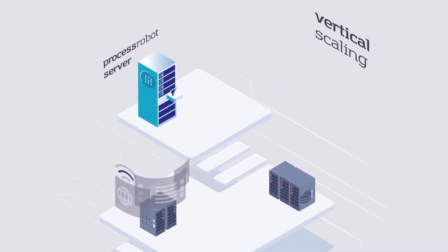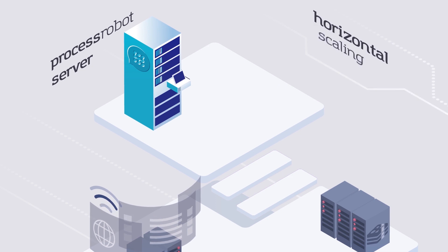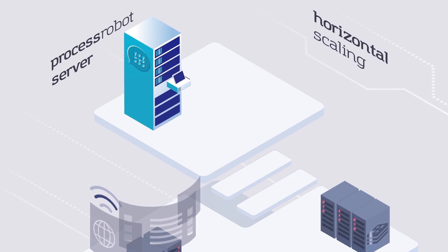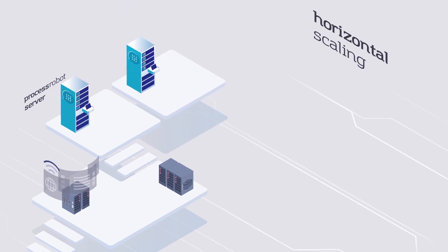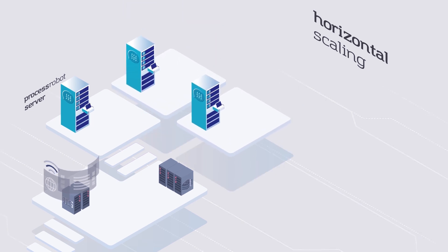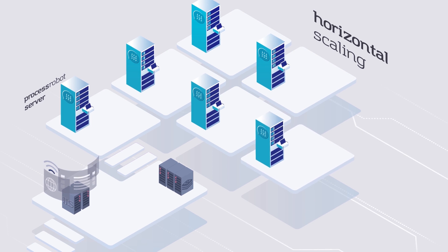Scaling Process Robot is effortless and fast, without requiring big IT teams or costly procedures. Process Robot offers unparalleled horizontal scaling, where several server instances are grouped together in an active-active configuration to share the RPA workload.